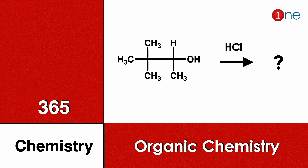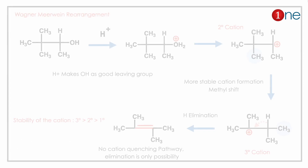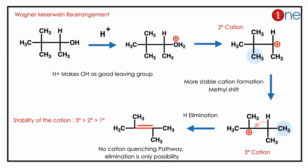Welcome to One Chemistry. This is the 365 Chemistry Series — organic chemistry questions. Here you have an alkyl alcohol with multiple methyl groups under acidic conditions. You need to find what the final product will be.